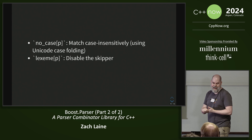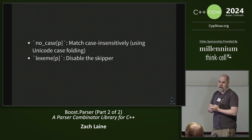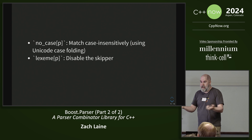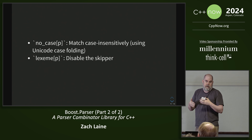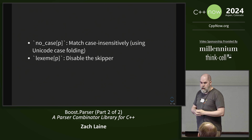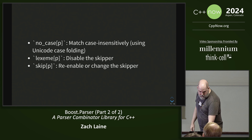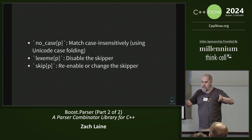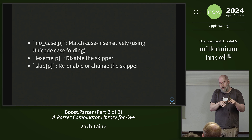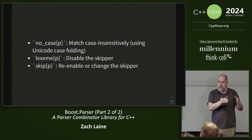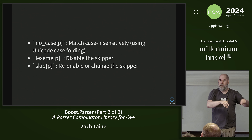So lexeme is disabling a skipper inherited from higher up — at the top level you provide the skipper, this is where you turn it off locally. And then locally within that, you can turn the skipper back on using reskip. You can also provide a parameter to skip, which gives you a new skipper. So instead of turning on skip within a certain lexeme context, you might want to change the skipper for a certain subsequence to something else.